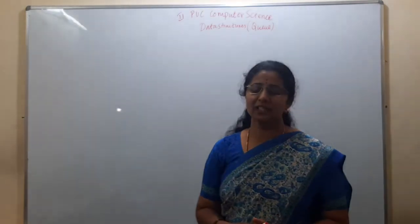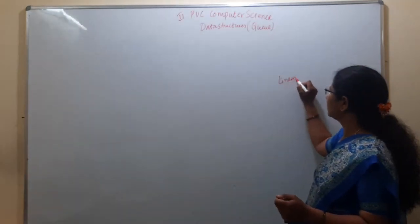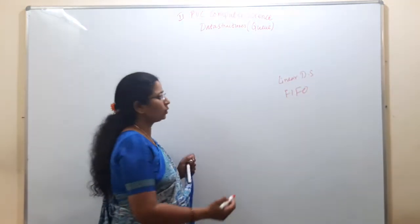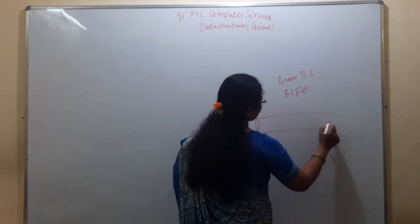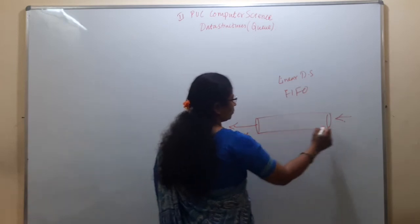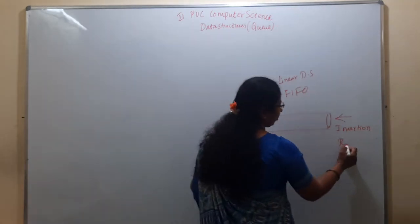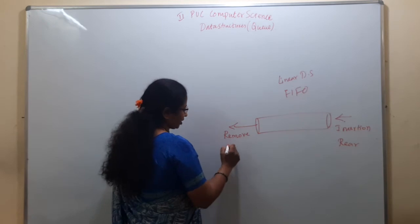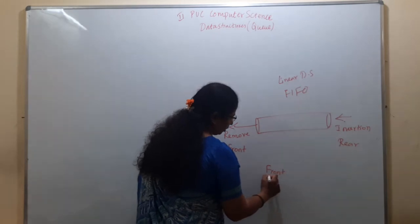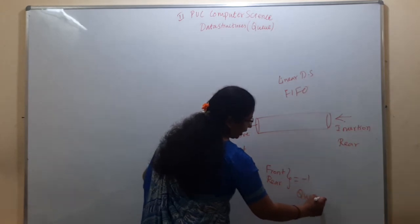Good morning students. In the last class we were discussing queues. A queue is a linear data structure that follows the first-in, first-out principle. It has two open ends: one for insertion and one for removal. Insertion is at the rear pointer end and deletion is at the front pointer end. If both the pointers are set to minus one, then the queue is empty.